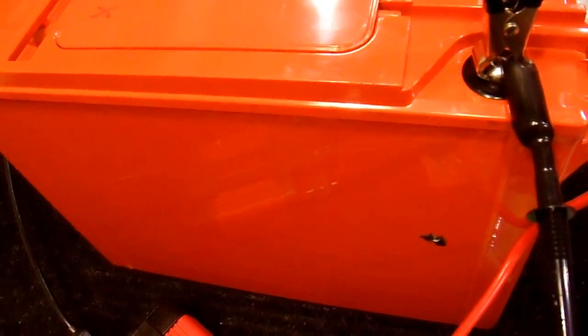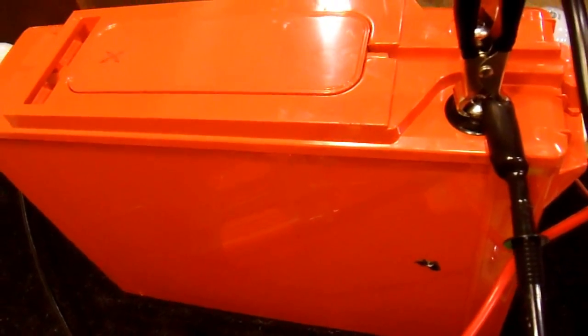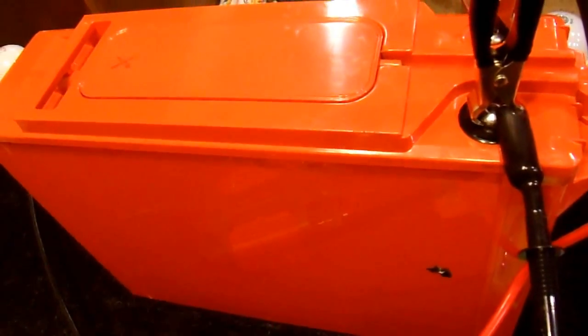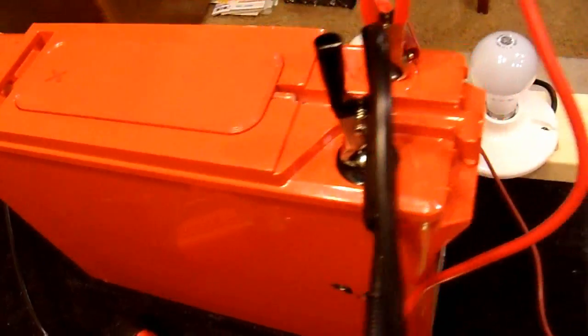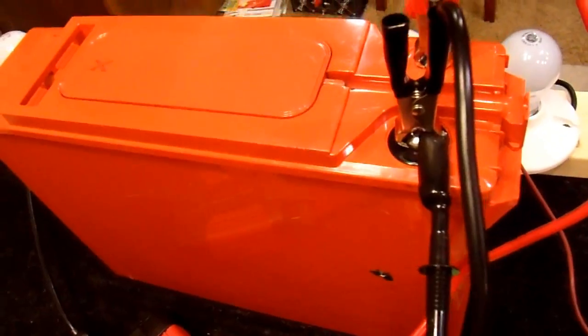And that's why we have to cycle the battery. Get that hard sulfation layer that we weren't able to turn back into battery acid to crack. We'll expand the plates and crack that layer which we just did by discharging it. That's what makes them expand. When you recharge it it shrinks again.